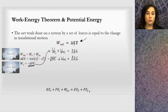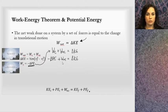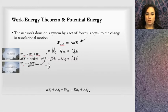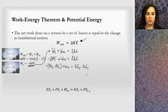I've started with the work-energy theorem and I'm putting in these identities - these re-conceptualizations of the quantities. A change is always final minus initial. So I'm going to write: negative potential energy final minus potential energy initial, plus work non-conservative, equals kinetic energy final minus kinetic energy initial.